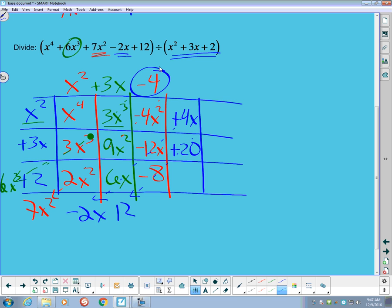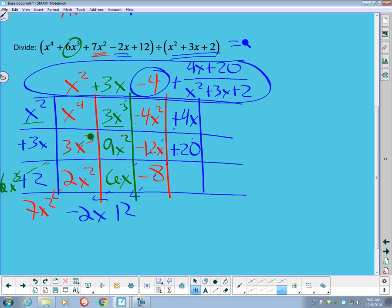So I have a remainder of 4x plus 20. And my divisor, again, was x squared plus 3x plus 2. So my final answer to this problem, again, like it was on the previous problem, is sitting right here. We'll rewrite that as an x squared plus 3x minus 4 plus 4x plus 20 over x squared plus 3x plus 2.